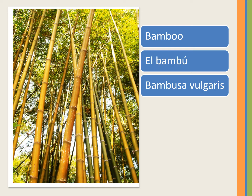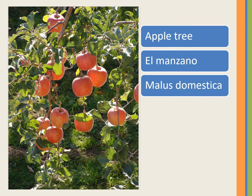Bamboo, el bambú, Bambusa vulgaris. Apple tree, el manzano, Malus domestica. Notice that for many fruit trees in Spanish, the fruit tree name is the masculine form of the fruit name. For example, the fruit apple is manzana in Spanish.